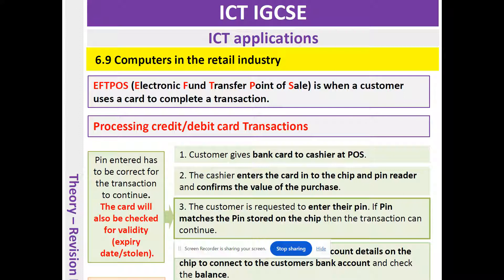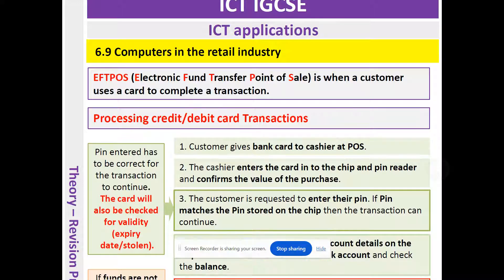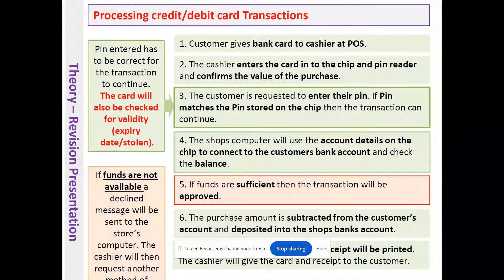We're looking at electronic fund transfer point of sale (EFT-POS). This is when a customer will use either a credit or debit card to complete a transaction. For example, we've gone to the grocery store, picked up some groceries — milk, eggs, bread — and we want to go ahead and pay. We're going to look at the process that takes place when we use a credit or debit card at the point of sale, which is basically at the till.